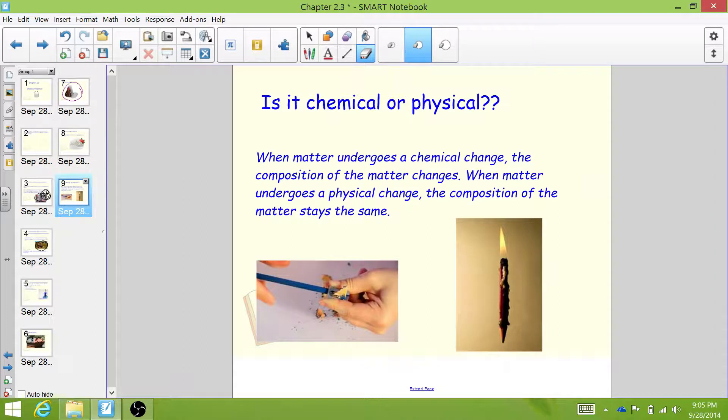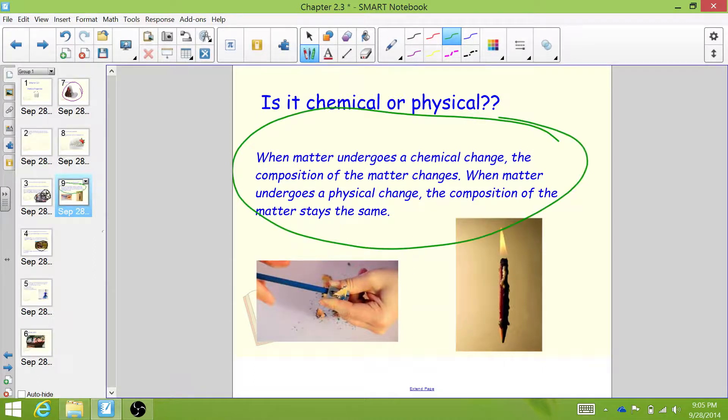A good way to know if it's chemical or physical change is to understand the basic definition of each. So this is really important. When matter undergoes a chemical change, the composition of the matter changes. When matter undergoes a physical change, the composition of the matter stays the same.